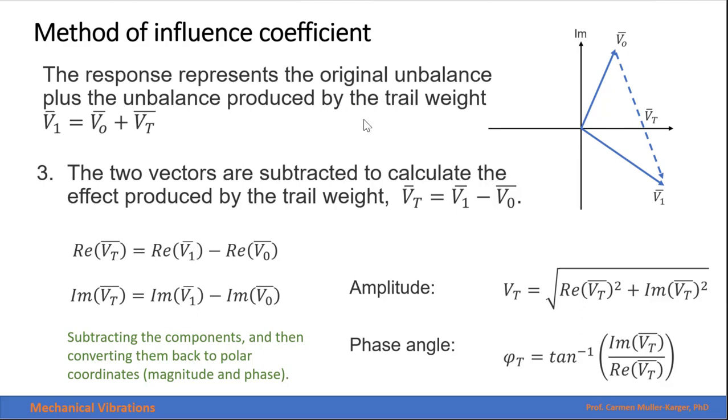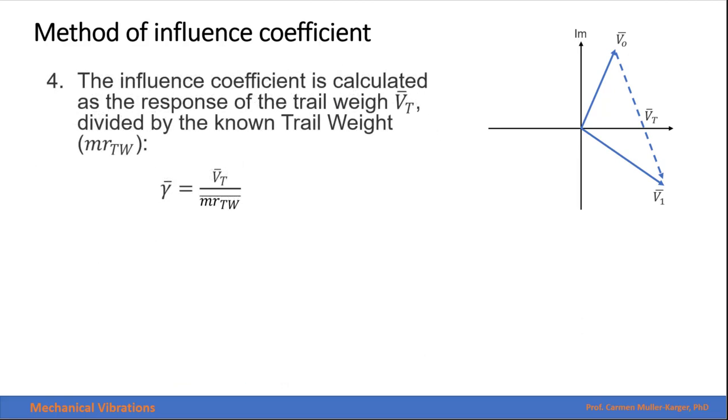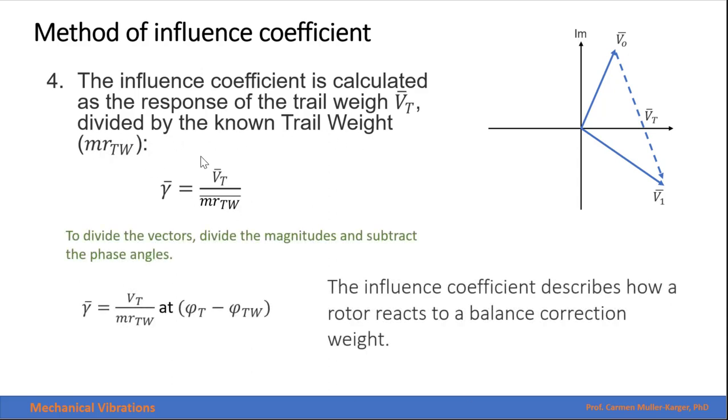The influence coefficient is calculated as the response of the trial weight that we just calculated, divided by the known trial weight that we applied to the rotor. To divide those two vectors, we divide the magnitudes and subtract the phase angles. The influence coefficient describes how a rotor reacts to an unbalanced correction weight.